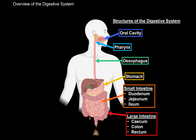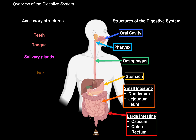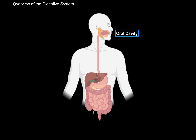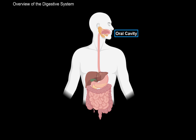But we also have a system of accessory structures which will help you digest the food we eat. Those include the teeth, tongue, and salivary glands. And then in the abdominal cavity, there's the liver, gallbladder, and the pancreas. So our goal is to go through the detailed anatomy of all of these structures, one by one, and we will start with the oral cavity.